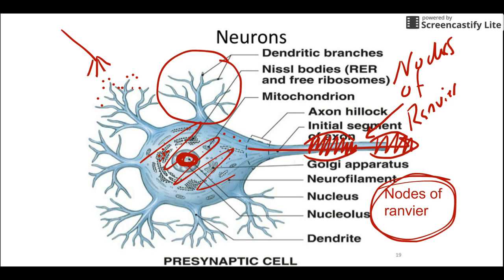So that's our neuron and neuroglia video. Remember: the neuroglia are the helpers — they maintain the environment. The neurons are the ones that send the signals. Everything else we're going to do in this unit is about how they send the signals and how the brain interprets them. We'll spend a lot more time on axons and dendrites as we move along.